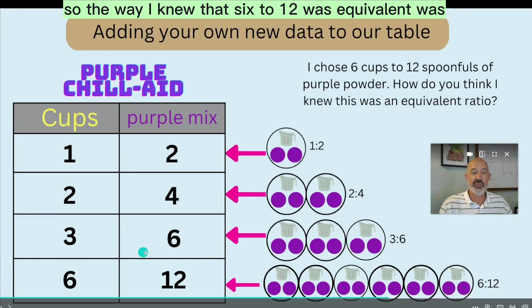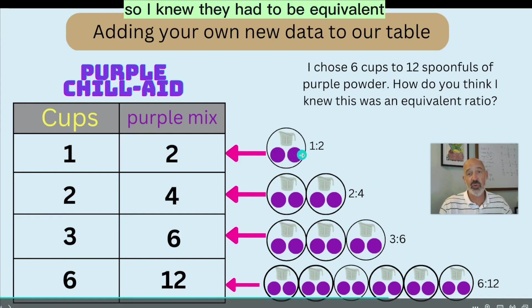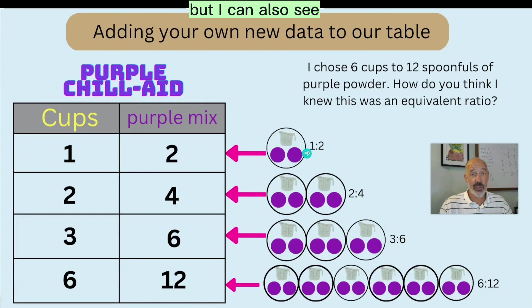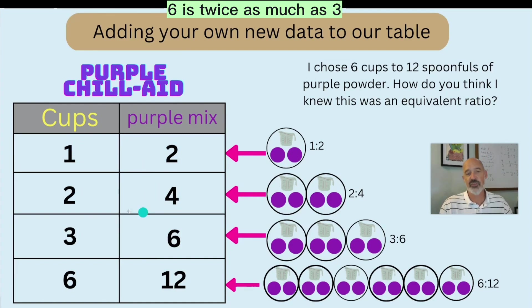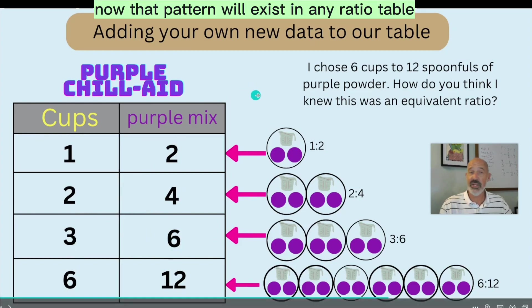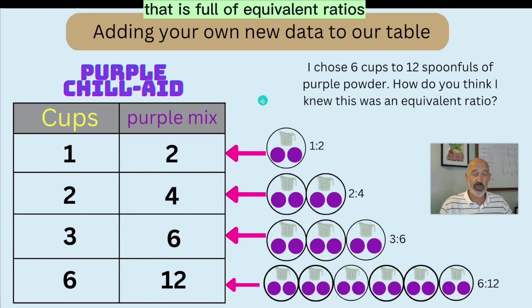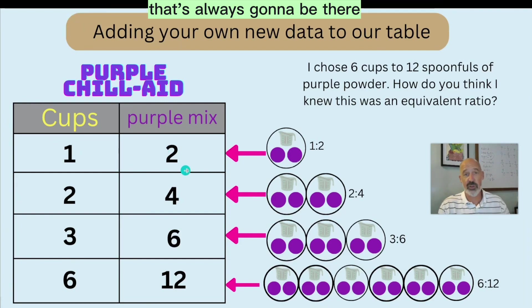So the way I knew that six to 12 was equivalent was a couple ways. One, I knew I just kept adding more and more batches of the same original batch. So I knew that it had to be equivalent. But I can also see mathematically that this ratio of one to two, the purple mix is always twice as much as the number of cups of water. So four is twice as much as two, six is twice as much as three, and 12 is twice as much as six. Now, that pattern will exist in any ratio table that is full of equivalent ratios. Not the fact that it's times two, but the fact that it's times or divided by something. That's always going to be there.